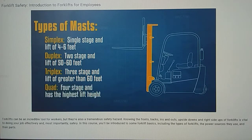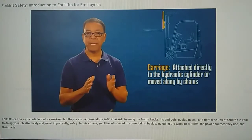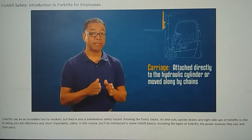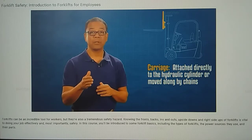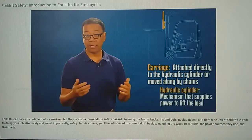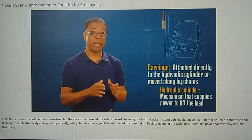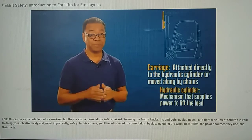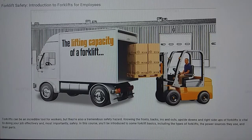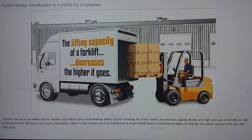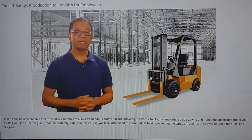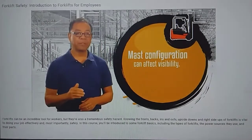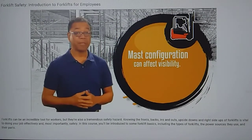And lastly, quad, which has a four-stage mast, the same free lift, but the furthest extension — it does require precaution at its highest lifting heights. The carriage is made of flat metal plates that are attached directly to the hydraulic cylinder or moved along the mast by chains. The hydraulic lift cylinder is the mechanism that supplies the power to lift the load. Keep in mind that the lifting capacity of a forklift decreases the higher it goes.